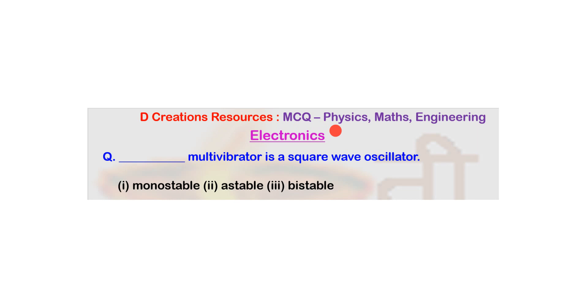The question is: blank multivibrator is a square wave oscillator. The options are monostable, astable, and bistable. If you know the answer, just mark and check, otherwise proceed.